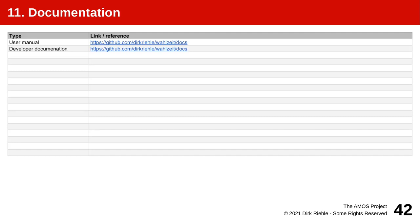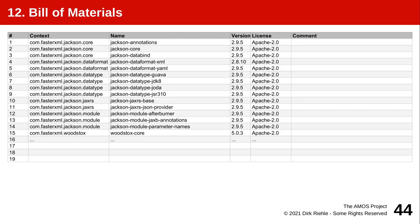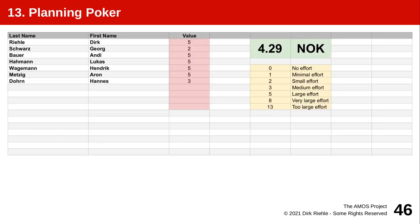On tab eleven, you provide links to your documentation — we expect at least a user manual and developer documentation. On tab twelve, you track the open-source libraries or any third-party libraries you're using; taken together they constitute the so-called Bill of Materials. We need the context, the specific library name, the version, and the license. The last tab is a simple tool for playing planning poker, a size estimation technique which we will discuss as part of our discussion of the team meeting coming up next.